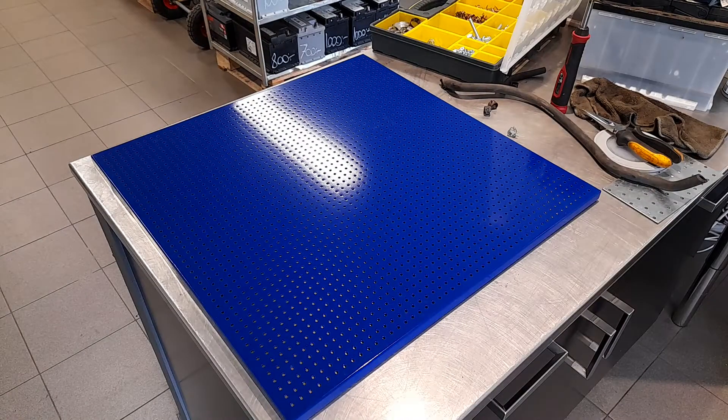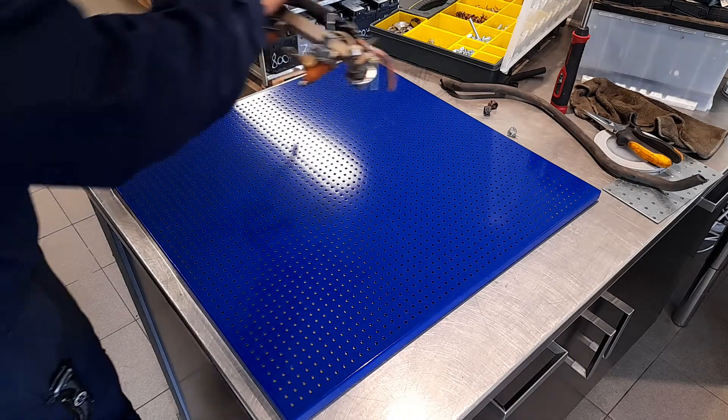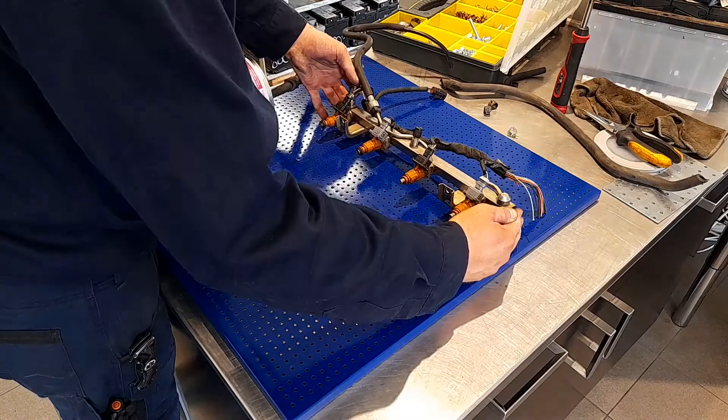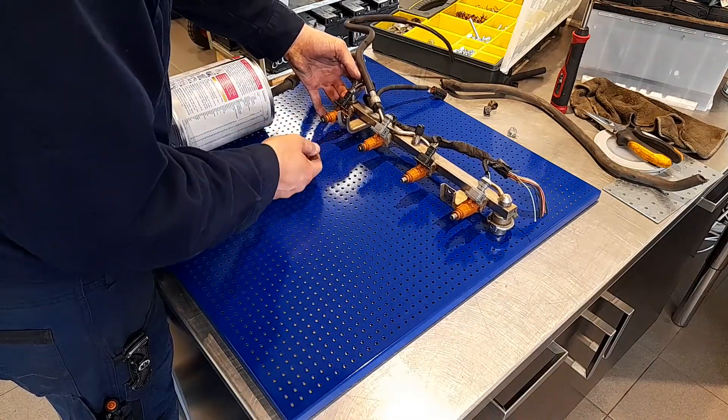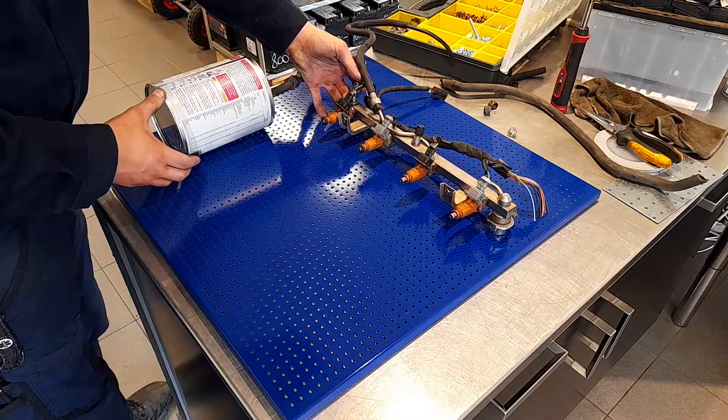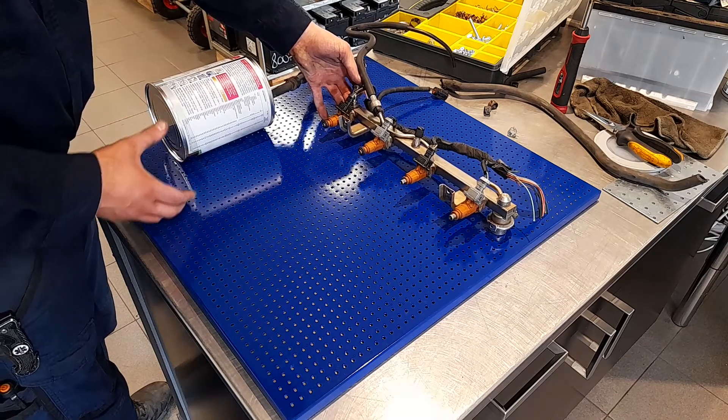I first start with putting the fuel related parts in a position I feel suitable. I then found out that I needed the fuel rail to stand out a little bit from my tool board. I solved this with some bolts.